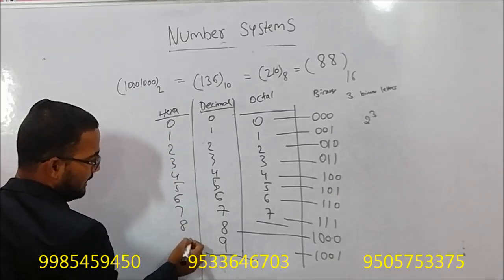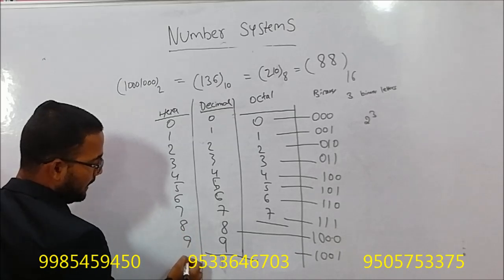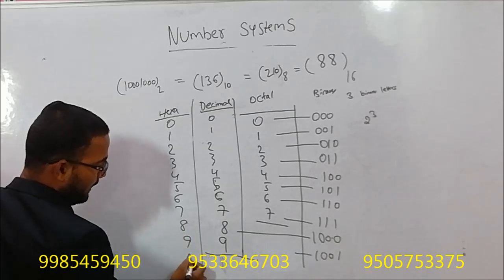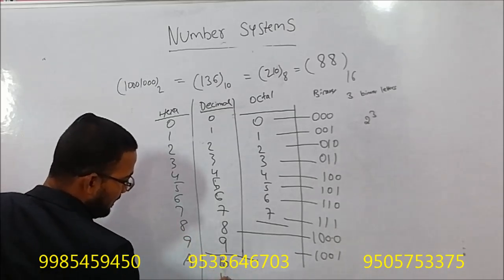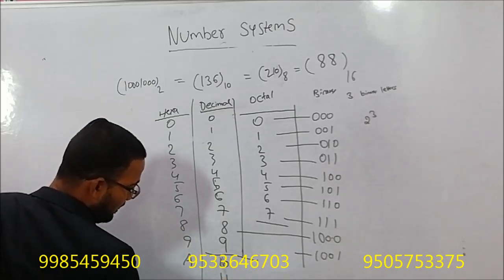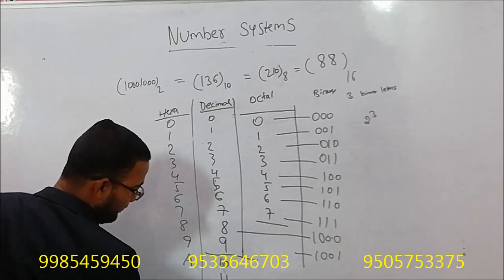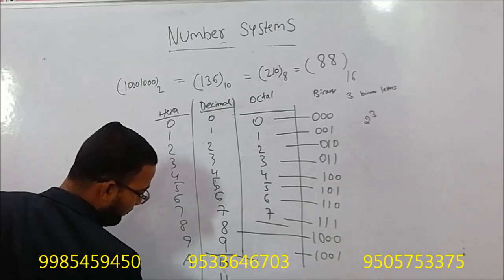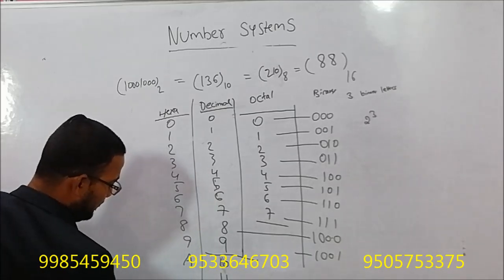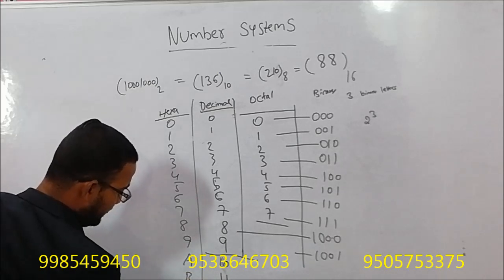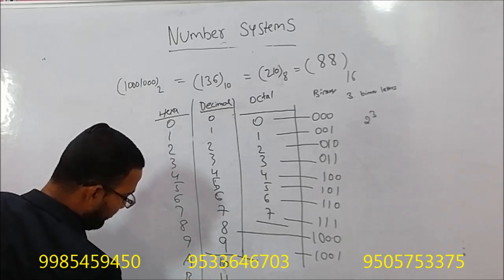In hexadecimal conversion, we are going to look at the numbers table. So 7, 8, 9 — then 10, 11, 12, 13, 14, 15. In hexadecimal, these are represented as A, B, C, D, E, F.